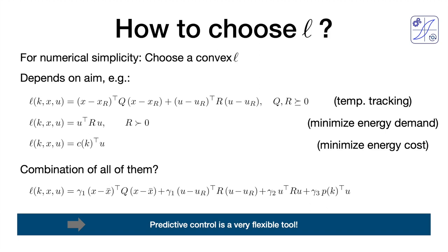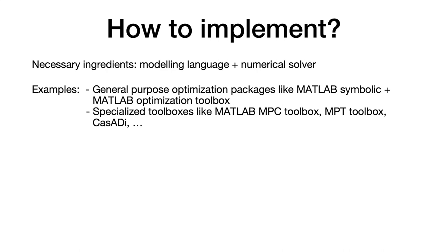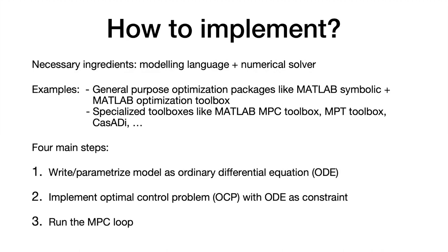Once set up, you can change the objective function to get completely different behavior. For implementation, there are different toolboxes — for example, the MATLAB MPC toolbox, the MPT toolbox from ETH, or the CasADi toolbox, which we use. CasADi is very nice because it allows use of one of the most efficient numerical solvers and provides automatic differentiation, freeing you from providing derivatives to numerical solvers. Implementation: first set up the ODE, then implement the optimal control problem specifying objective function and constraints, then run the MPC loop.